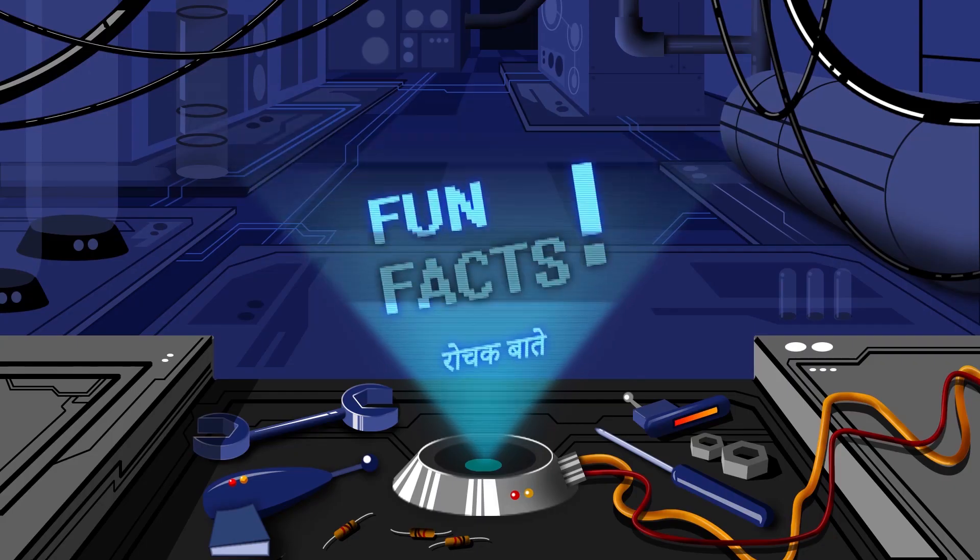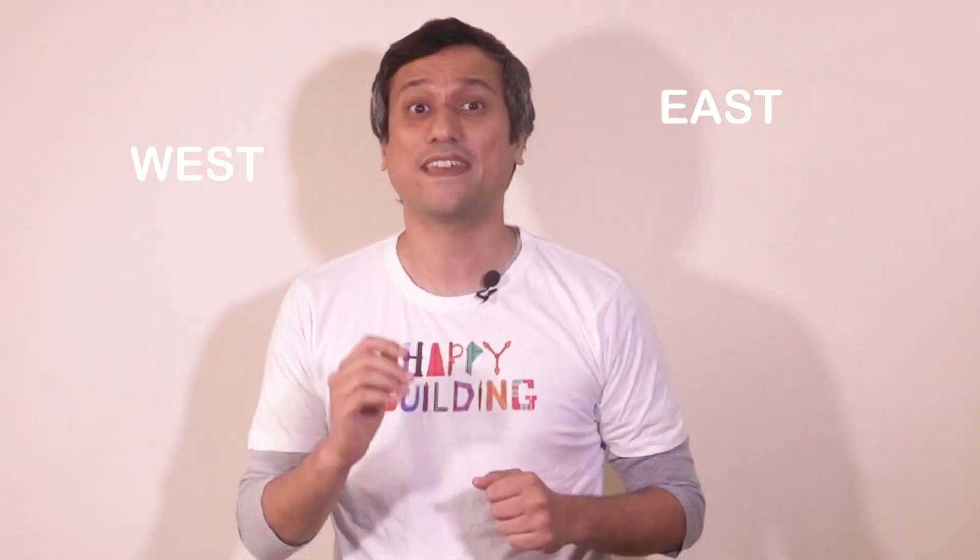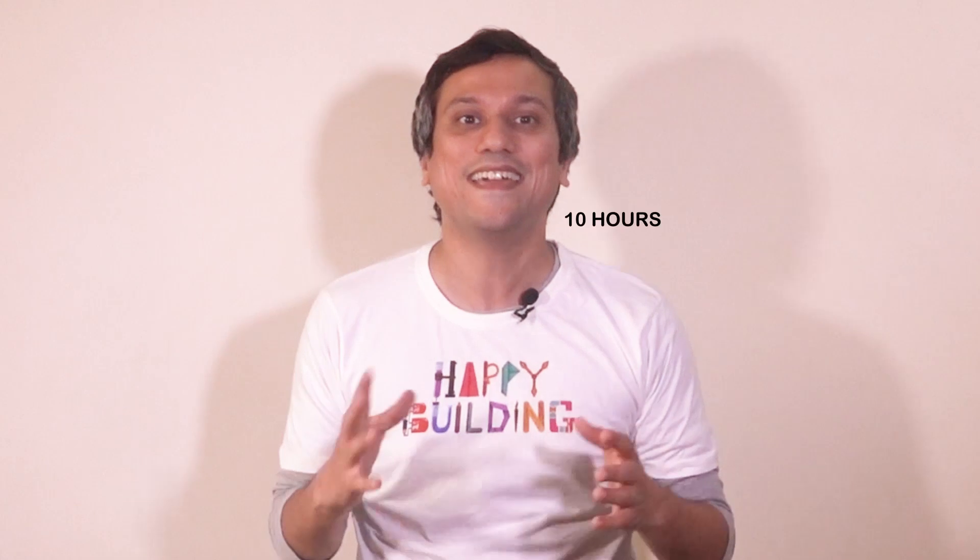It's time for some fun facts. Two scientists proved time dilation by each flying around the world, east and west, carrying four synchronized atomic clocks. Upon landing, they compared them to atomic clocks they'd left on the ground and found that their clocks were no longer in sync. France once tried simplifying time by using a decimal clock in which there were only 10 hours in a day.